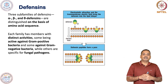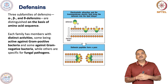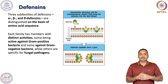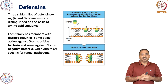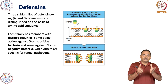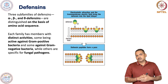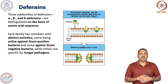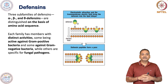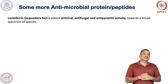This occurs via electrostatic attraction. The transmembrane electric field brings the defensin close to the lipid bilayer of the microbial pathogen, and it is deposited in such a way that it creates a pore. This is the way defensin acts, and it is quite common for other antimicrobial peptides as well.